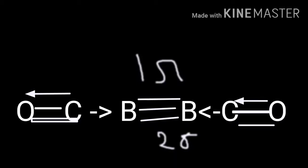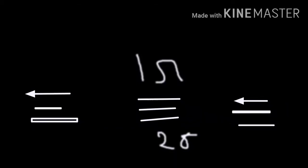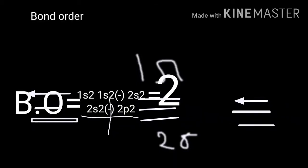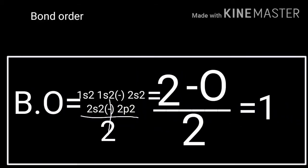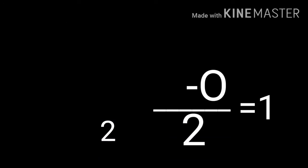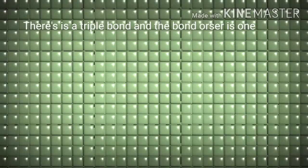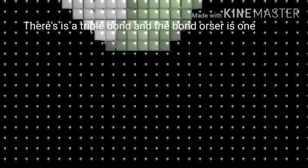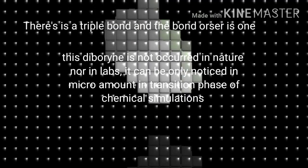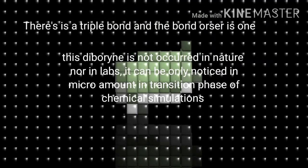Strangely, this compound has two sigma and one pi bond in its triple bond. Besides, the bond order of this molecule is also only one — so there is a triple bond and the bond order is only one.